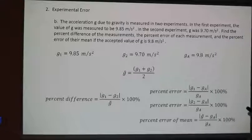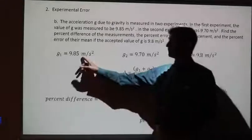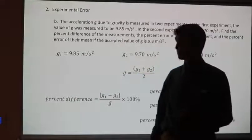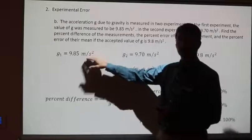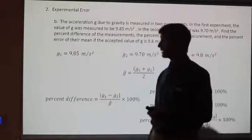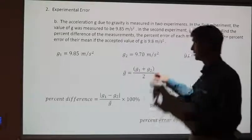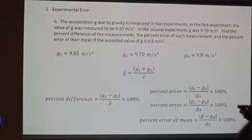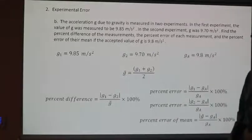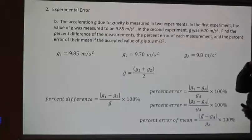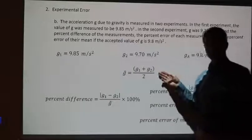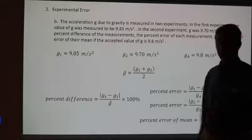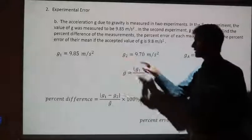In Part B, we're going to compare two measurements of gravity. We know that on the surface of the Earth, gravity is 9.81 m/s². In this experimental case there was some error: the first measurement was 9.85 (a bit high) and the next was 9.70 (on the low side). We want to compare these to an accepted value of 9.8. It asks you to calculate the mean — take the sum of all individual measurements and divide by the number of measurements, so this plus this divided by 2.